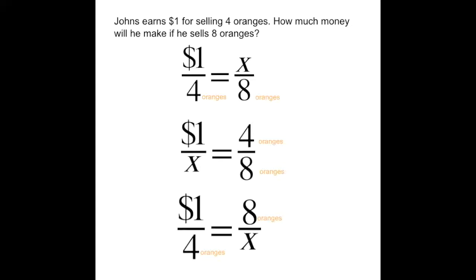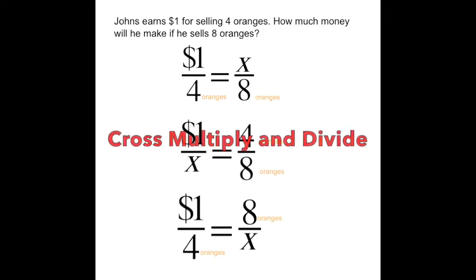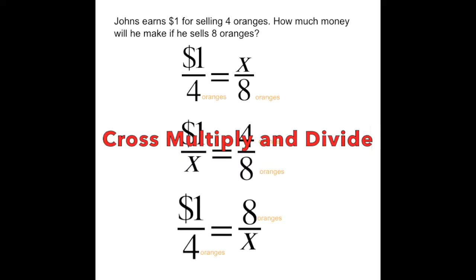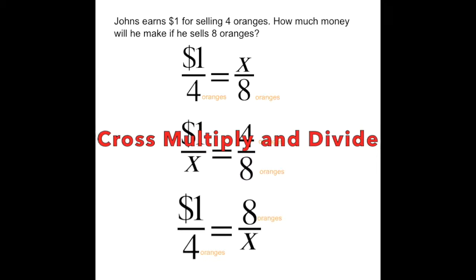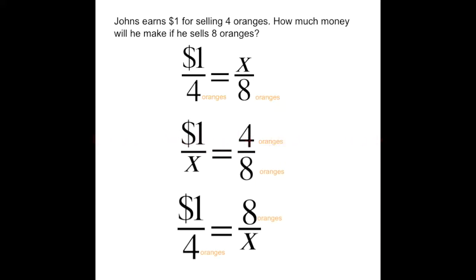X represents the amount for eight oranges, over eight, which is the eight oranges. When we set up a proportion, we can use the strategy cross multiply and divide to help us find a missing value.